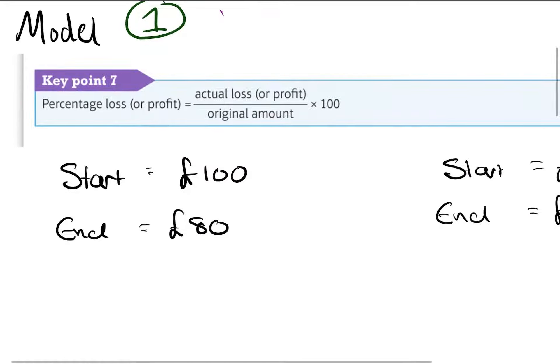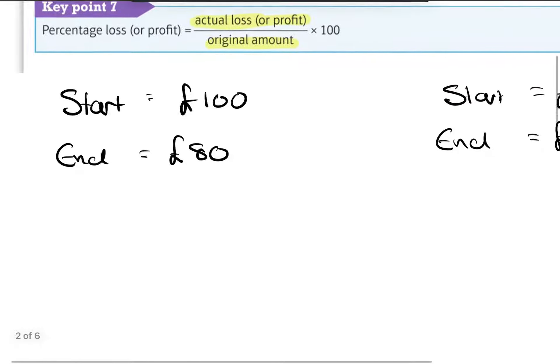Percentage loss or profit is actual loss or profit over the original amount times 100. So same as last time.